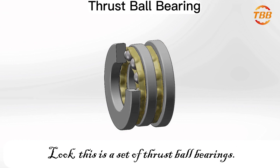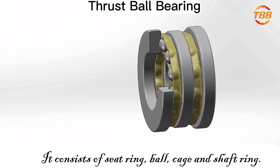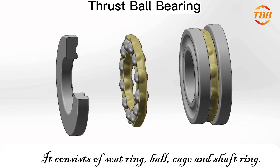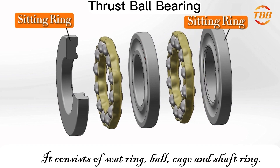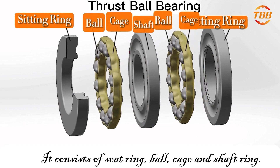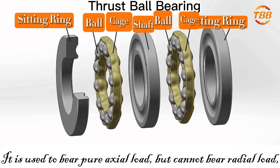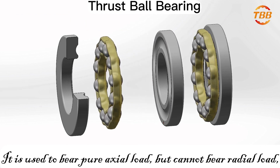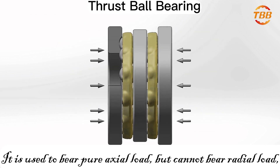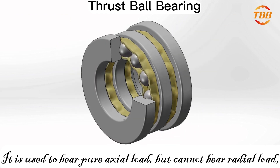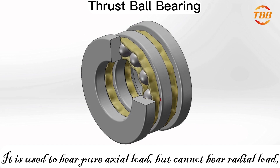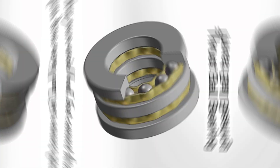This is a set of thrust ball bearings. It consists of seat ring, ball, cage, and shaft ring. It is used to bear pure axial load but cannot bear radial load, and the limit speed is slow.